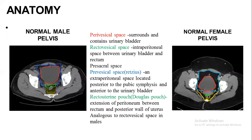Regarding anatomy, here is an image showing normal male and female pelvis. The spaces related to the urinary bladder are the pre-vesicle space that surrounds and contains the urinary bladder, the rectovesicle space, and an intraperitoneal space between urinary bladder and rectum. The pre-sacral space; the pre-vesicle space or space of Retzius is an extraperitoneal space located posterior to the pubic symphysis and anterior to the urinary bladder. The recto-uterine pouch or pouch of Douglas is an extension of peritoneum between the rectum and posterior wall of the uterus, analogous to the rectovesicle pouch in males.